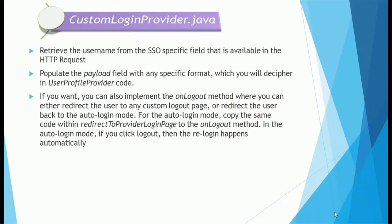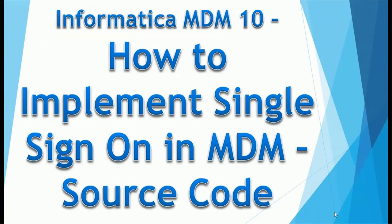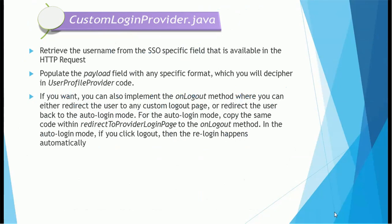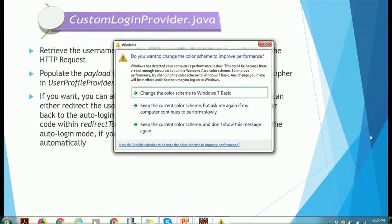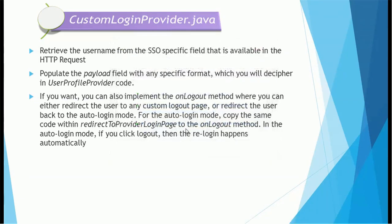There are a couple of classes in Java — we know that the basic component is a class. We have to develop a couple of classes in order to implement SSO. The very first class we need to implement is the Custom Login Provider. Of course we can give any name to this class, but this is just standard practice. You can use your company name like ABC Login Provider or something like that.